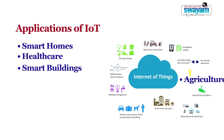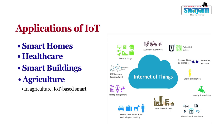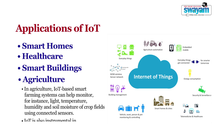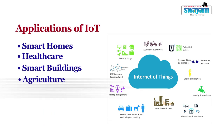Another area of application is agriculture. IoT-based smart farming systems can help monitor light, temperature, humidity, and soil moisture of crop fields using connected sensors. IoT is also instrumental in automatic irrigation systems. Another very important application is the smart city.